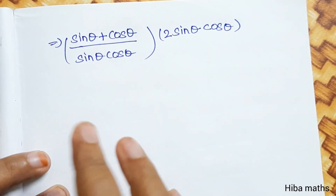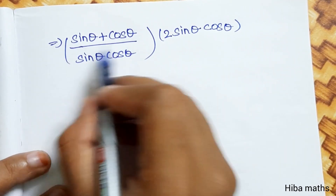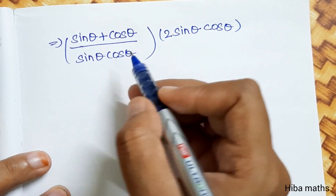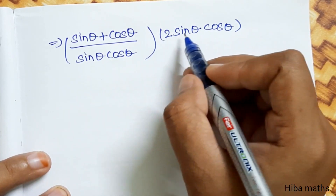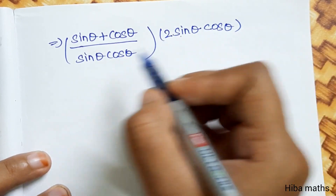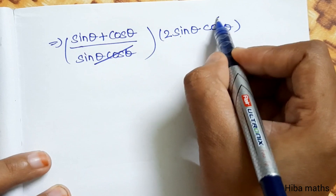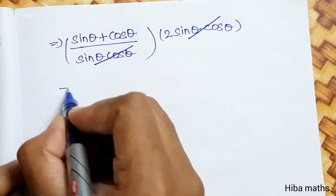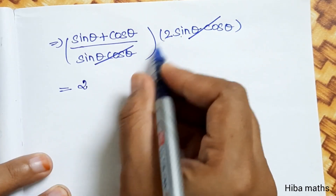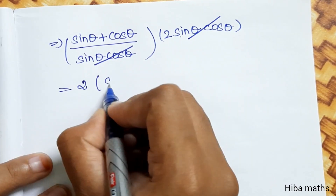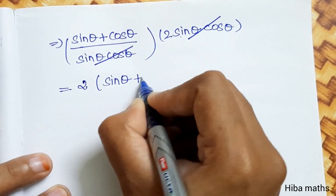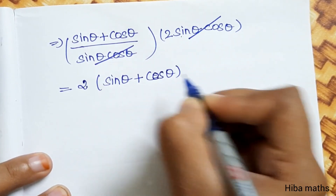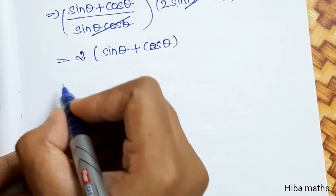The balance simplifies to (sin θ + cos θ) divided by (sin θ cos θ), multiplied by 2 sin θ cos θ. The sin θ cos θ cancels, leaving sin θ + cos θ, which equals P.